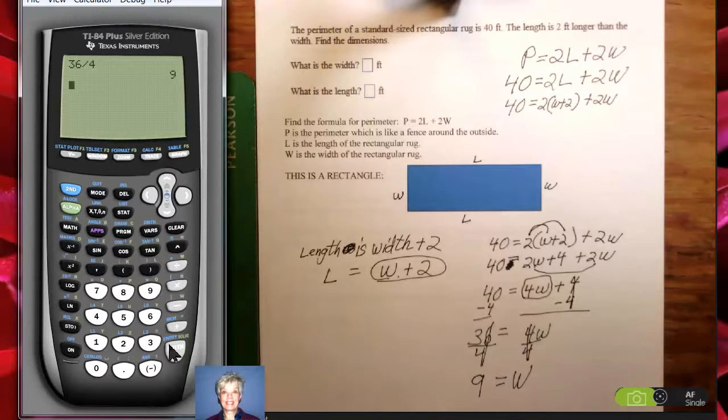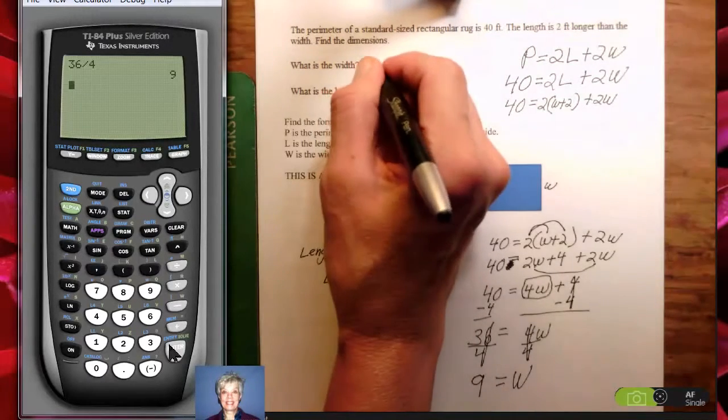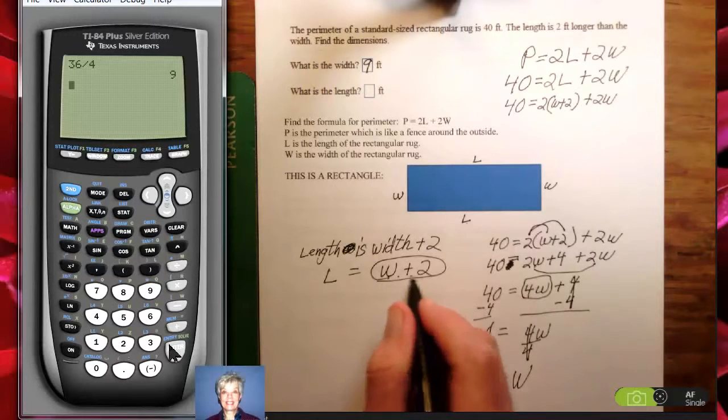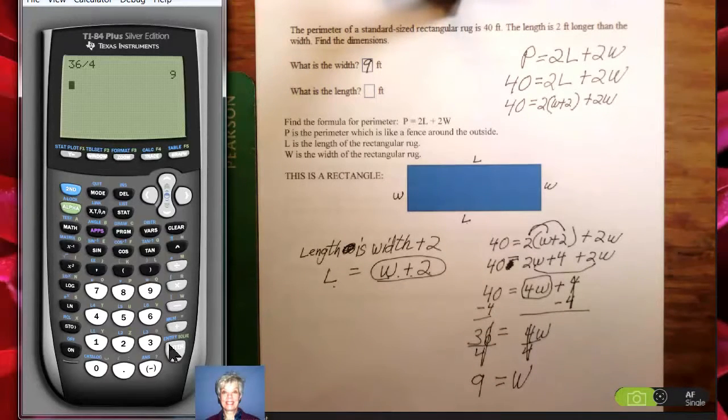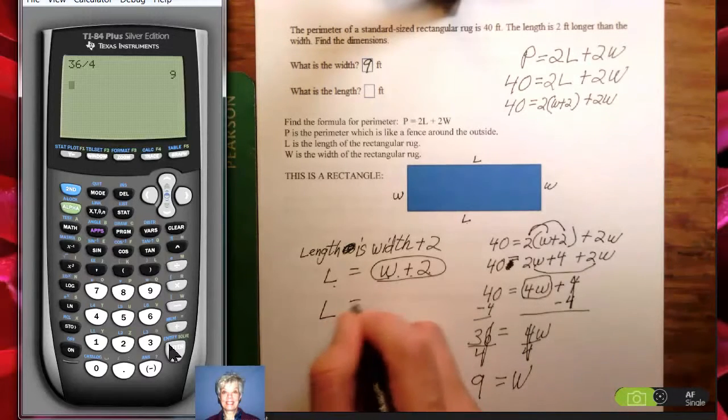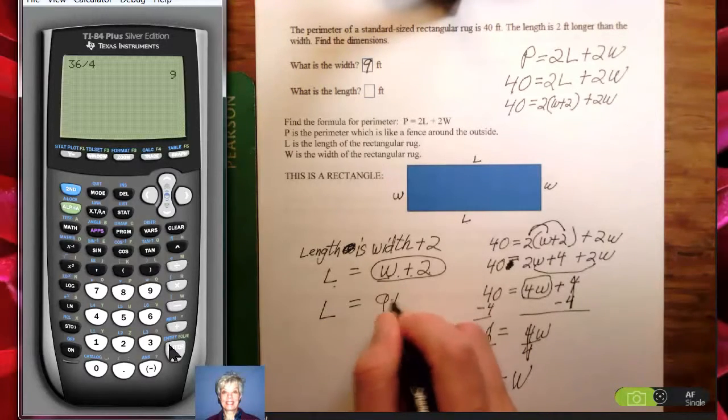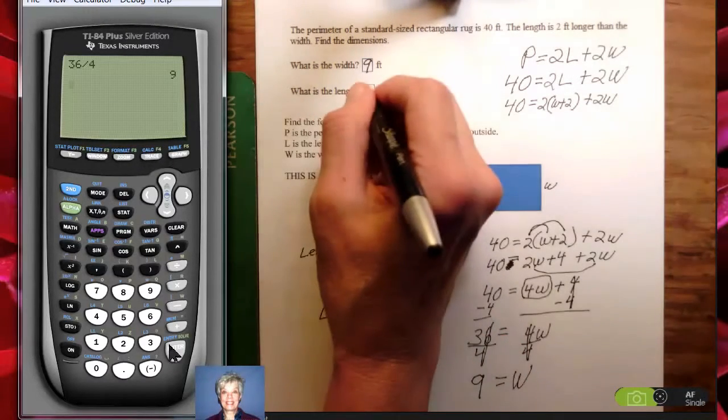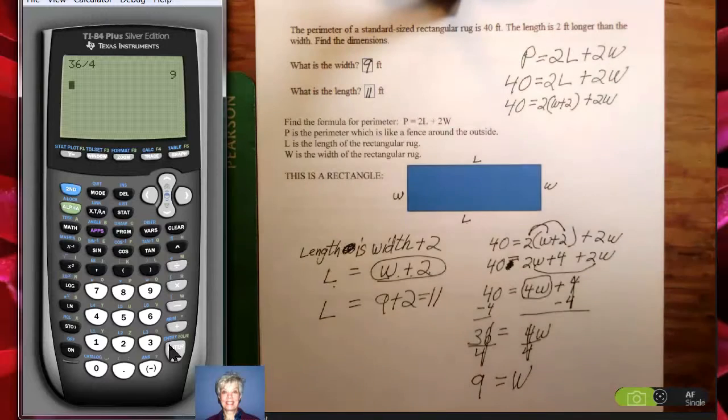Alright, 9 what? 9 feet. So, the width, W, is 9 feet. Now, the length, come over here. Look, W plus 2 is what length equals. I already know what W is. It's 9. So, the length is going to equal 9 plus 2, which is 11. So, the length is going to equal 11 feet.